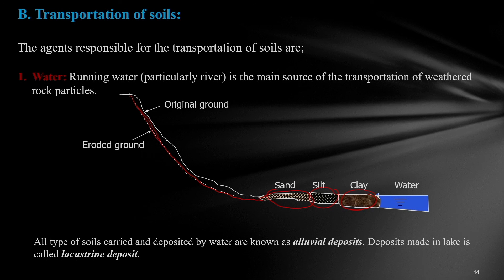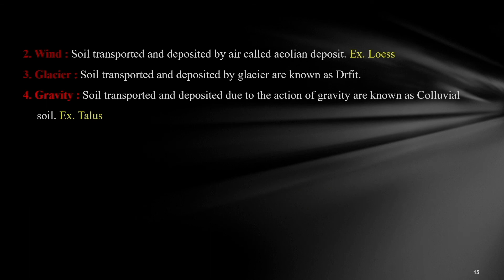For example, if it is deposited in a lake, then the soil is known as lacustrine soil. If it is transported by a glacier and deposited, it will be known as drift. If it is transported by gravity and deposited, then it is known as colluvial soil — an example of this is talus.